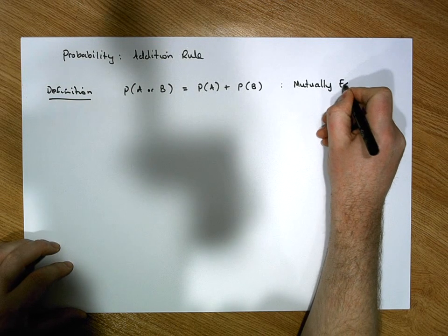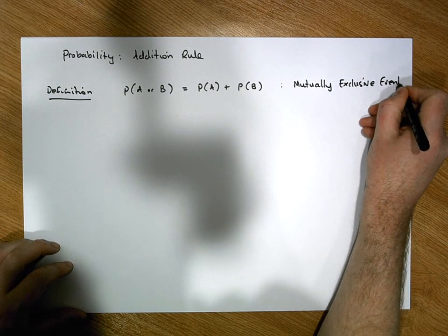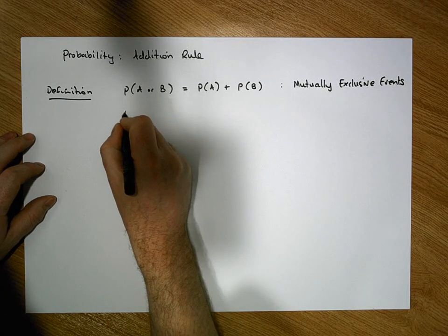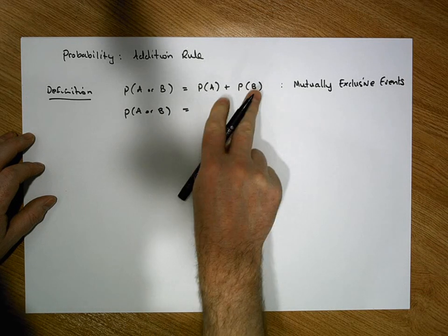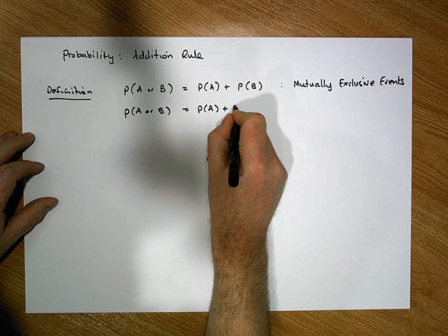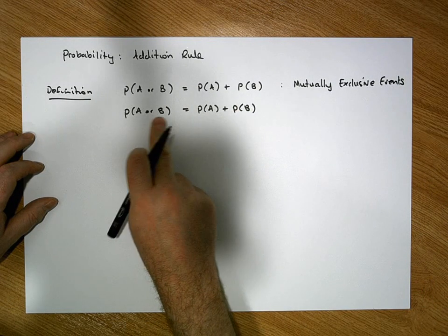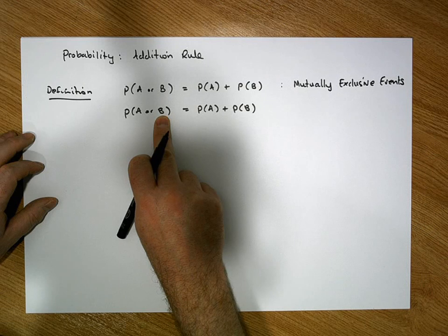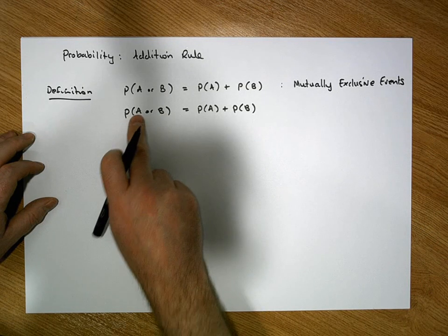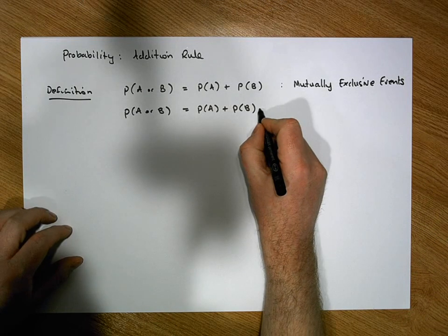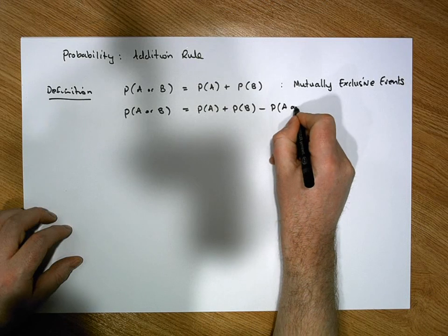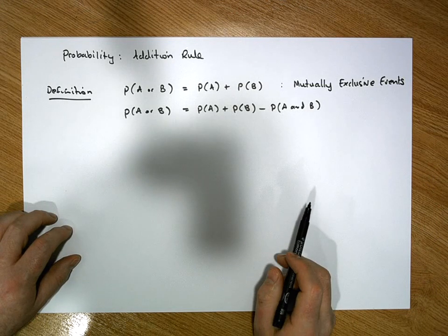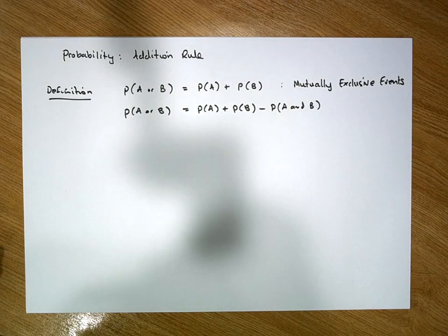This simple sum rule applies for mutually exclusive events. When the two events are not mutually exclusive, there's another version known as the general version, which says the probability of A or B is still equal to the probability of A plus the probability of B, but because A and B share some characteristic, when counting favorable outcomes for A and then for B we would have over-counted. So we need to take away the joint event — the probability of A and B — to correct for how many events we over-counted relative to the total number of possible outcomes.